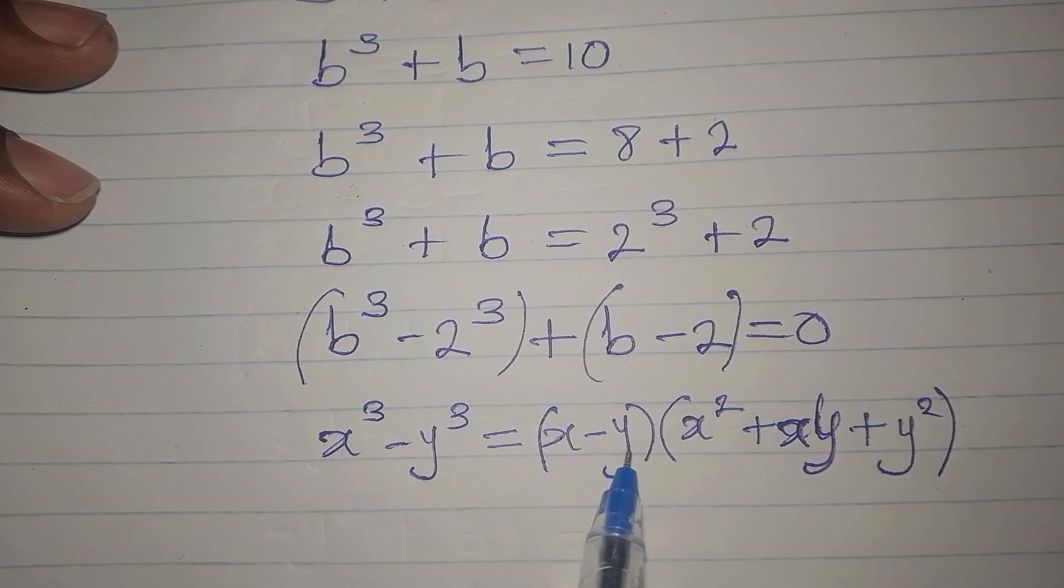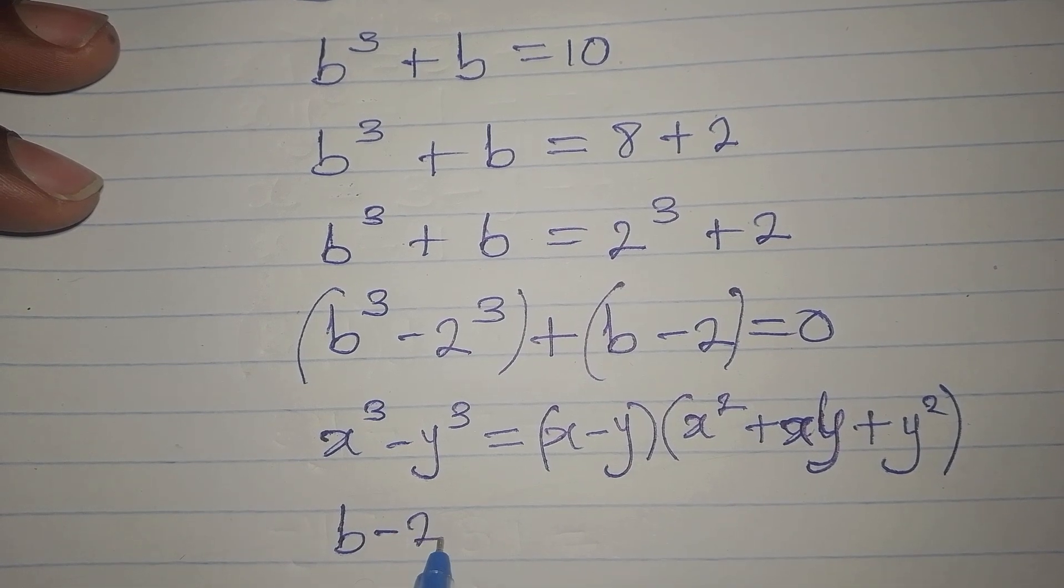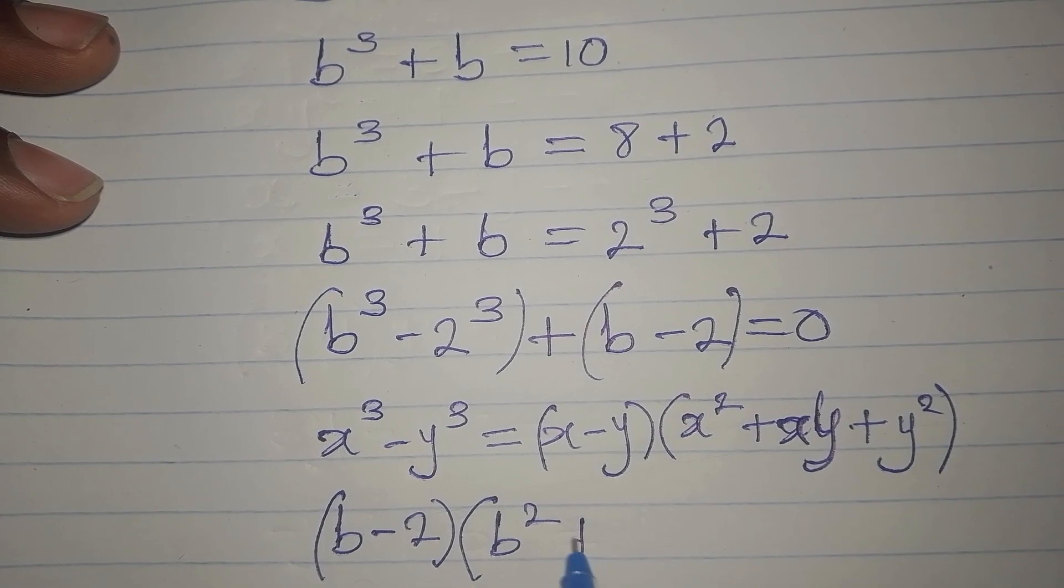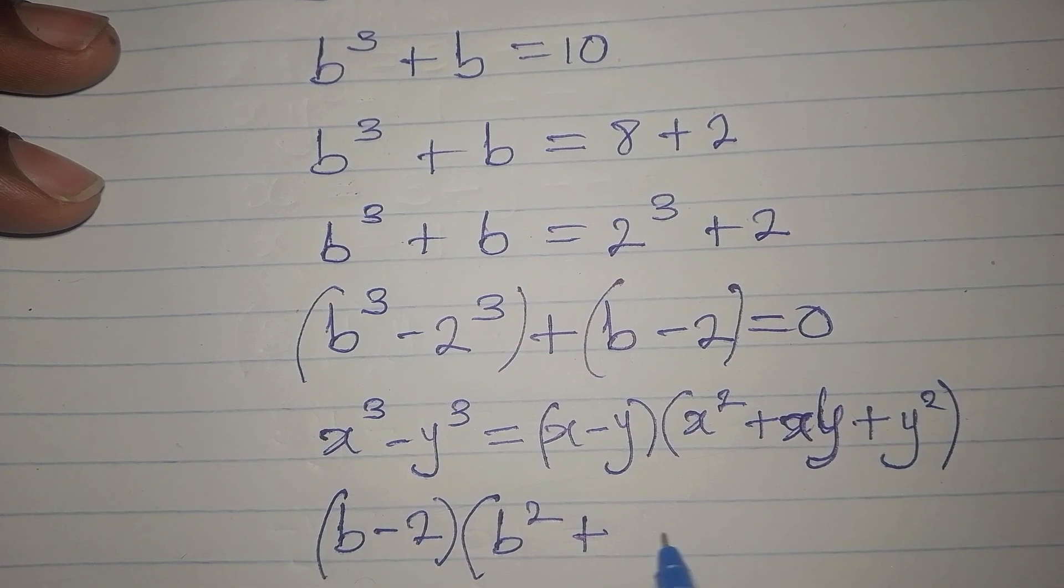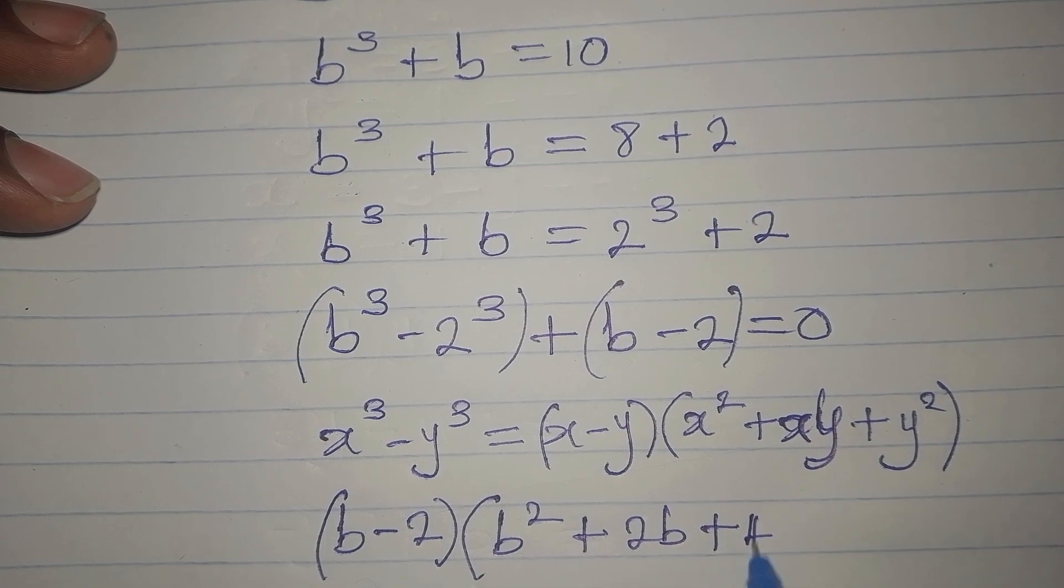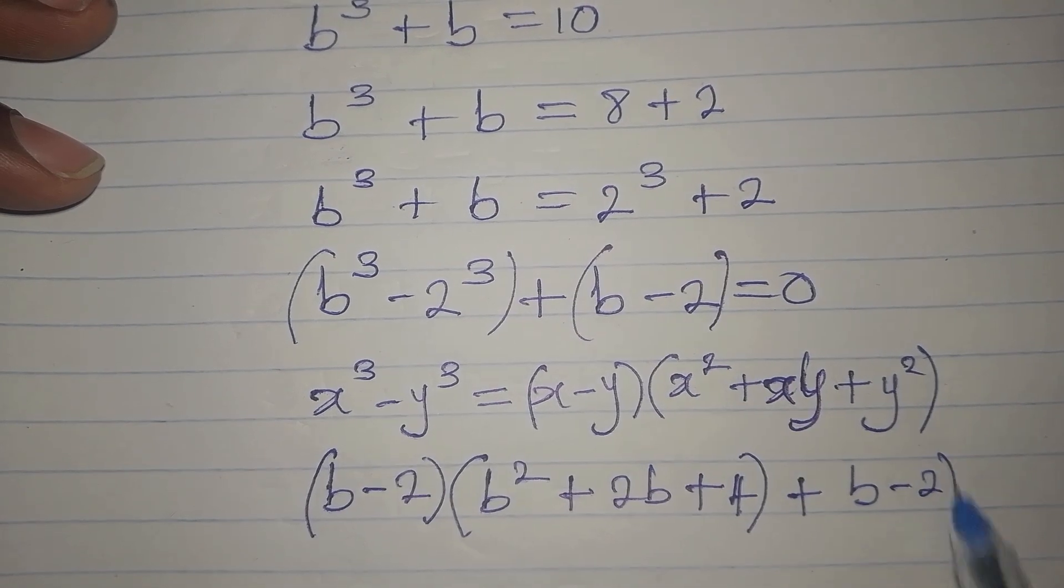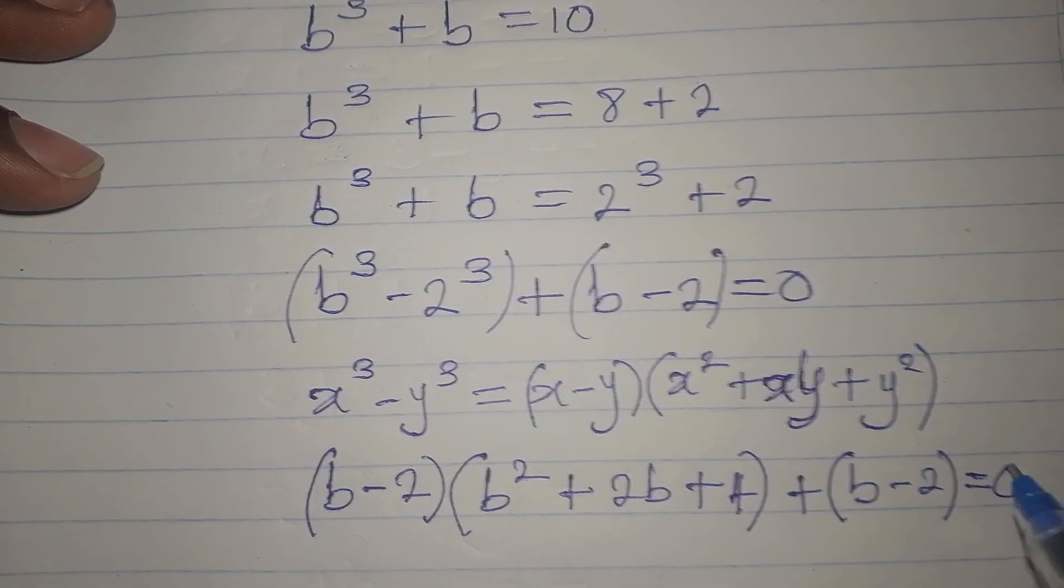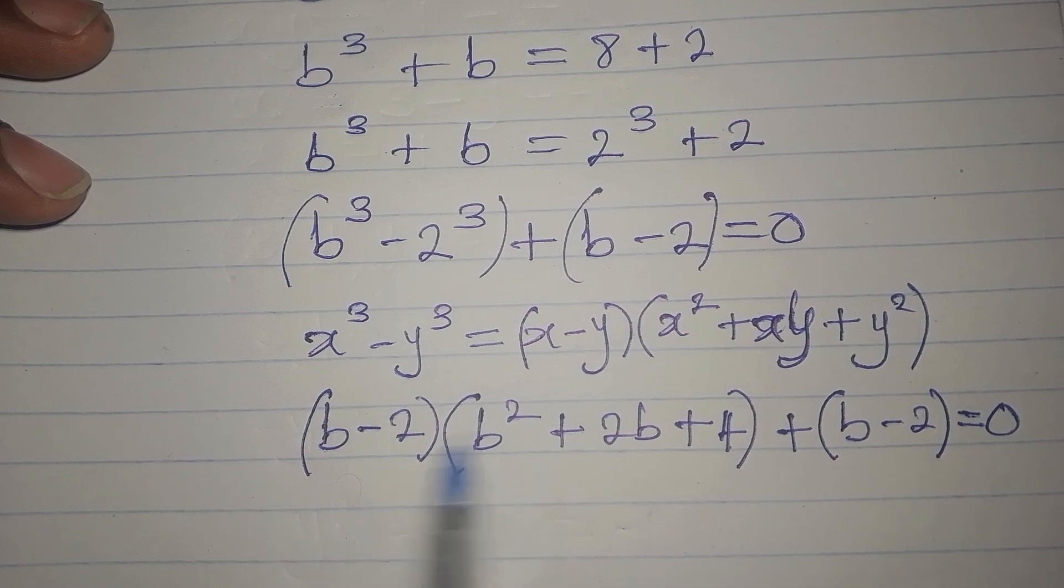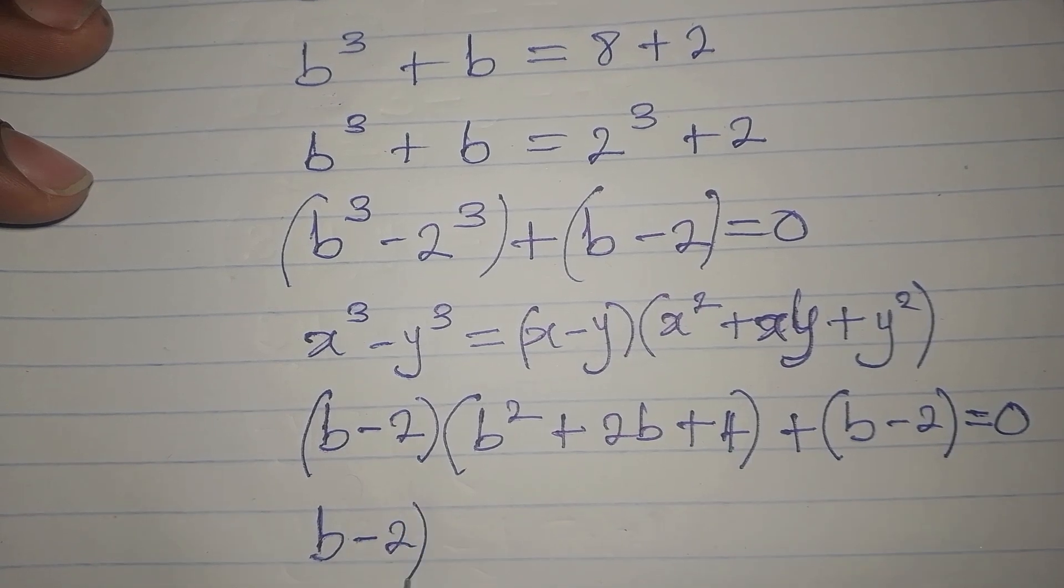So now we have (b - 2)(b² + 2b + 4). Then we close this. Remember I still have b - 2 in the other bracket before I equate to 0. Now, b - 2 is common, so it's the common factor and it comes out.